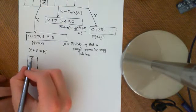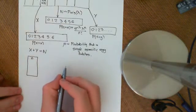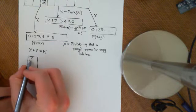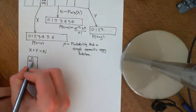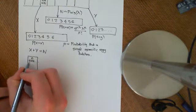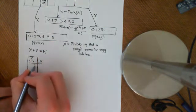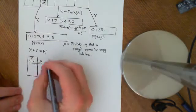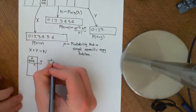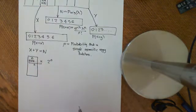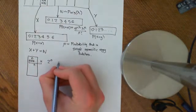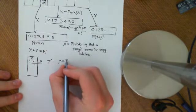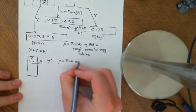She's laid little n eggs. How many possibilities are there for what can happen next? Each egg can either hatch or not hatch, so there are 2^n possibilities. We also know that p is the probability that a single egg will hatch.